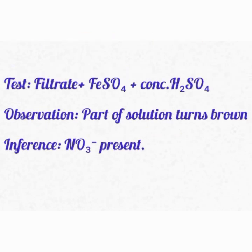For the next test — filtrate plus iron(II) sulfate (FeSO₄) — you may not notice much on addition of FeSO₄ alone, but on addition of concentrated H₂SO₄ you notice a brown spot or brown ring at the point where the concentrated H₂SO₄ touches the solution. This indicates that nitrate ion (NO₃⁻) is present — this is the brown ring confirmatory test for nitrate.